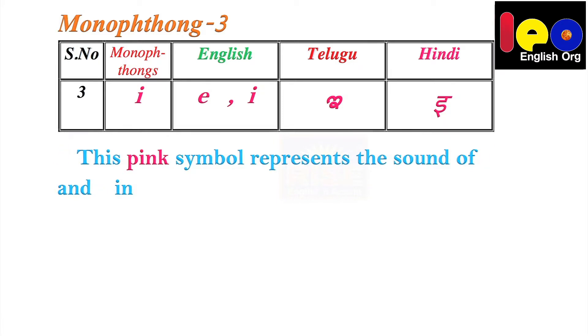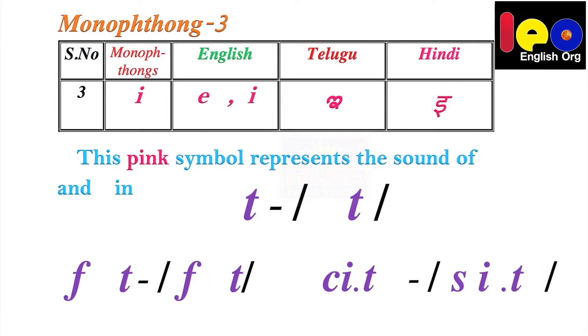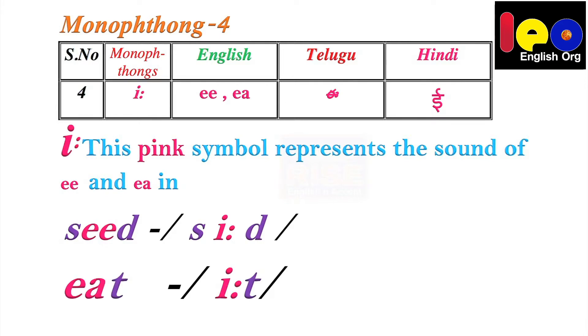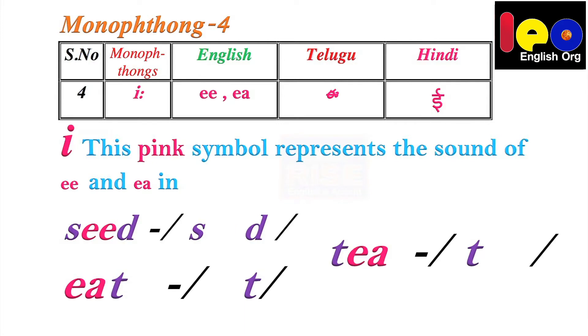Monophthong 3. This pink symbol represents the sound of I in 'it,' I in 'fit,' and Y in 'city.' It means I and Y sound like E. Monophthong 4. This pink symbol represents the sound of EE in 'seat,' EA in 'eat,' and EA in 'tea.' If you see two dots after any vowel, please take that vowel as the long form.